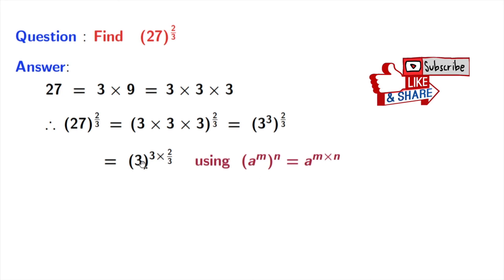Here, a denotes 3 and n denotes 2 by 3. Now, look that in the power 3, 3 gets cancelled.